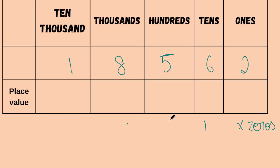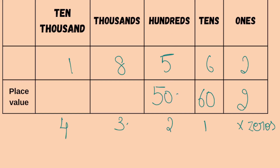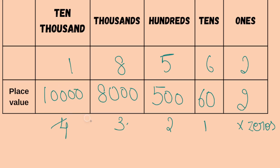So, no zeros in the 1s place, 1 zero in the 10s place, 2 zeros in the 100s place, 3 zeros in the 1000s place, and 4 zeros in the 10,000s place. In the 1s place, write the number as it is. In the 10s place, write the number and add 1 zero. In the 100s place, write the number and add 2 zeros. For 8 in the 1000s place, there are 3 zeros. For 1 in the 10,000s place, there are 4 zeros.